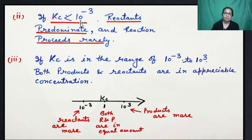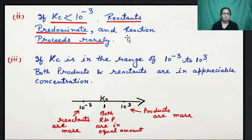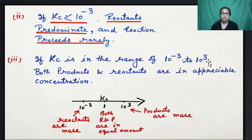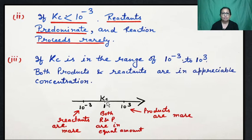If the value of KC is less than 10 to the power of minus 3, then the reactants are more than the products — the product concentration is very low — meaning the reaction has hardly proceeded. So we have two conditions based on KC value, and the reaction status — whether it is near complete or barely started — can be determined. Here I have shown a number line where the value KC = 1 is the center point, meaning reactants and products are in equal amounts.